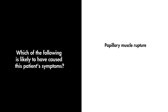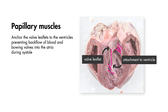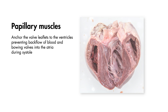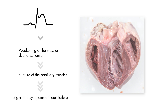The correct answer is papillary muscle rupture. Papillary muscles are muscular projections that arise from the ventricles and anchor the leaflets to the ventricle. This anchoring prevents backflow of blood through the valve during systole. During an MI, these muscles can be weakened due to ischemic tissue and, as a result, lead to symptoms of heart failure like we see in this case.